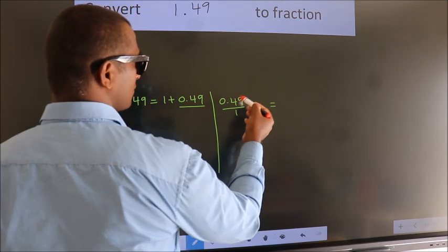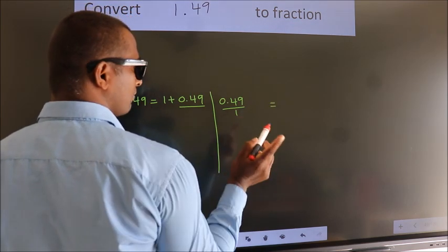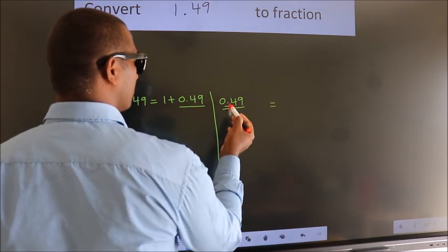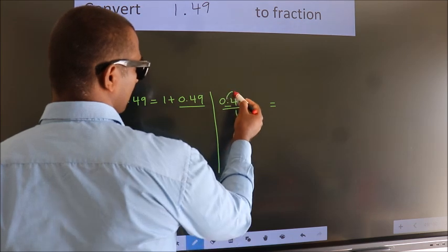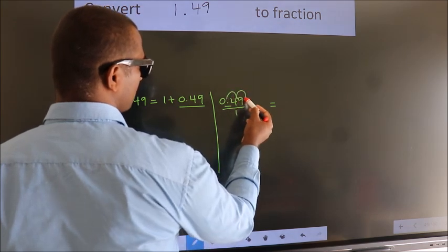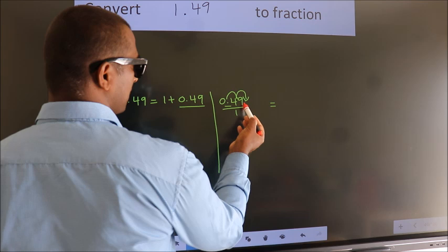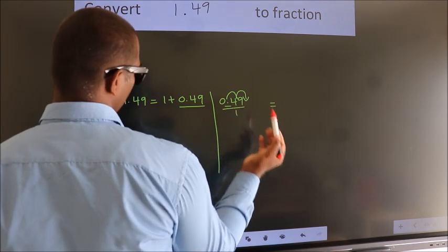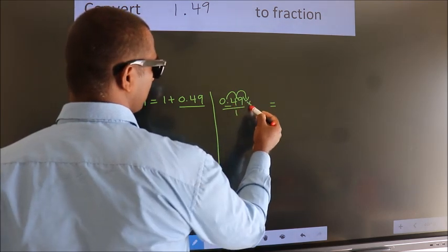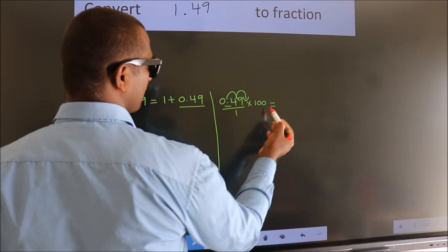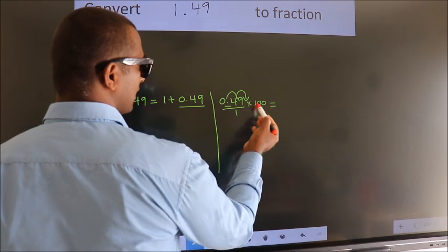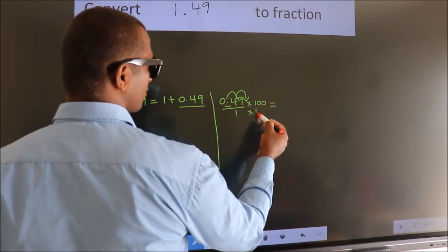To convert this to fraction, we have to move the decimal after 2 numbers. For that we should multiply it with 100. Whatever you multiply in the numerator, in the denominator also do the same.